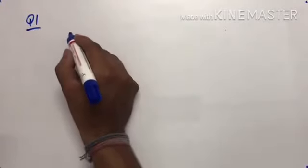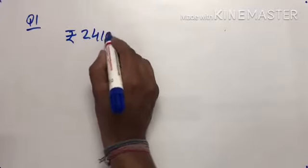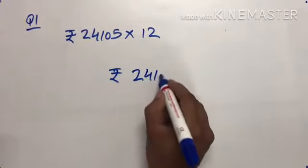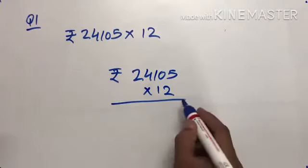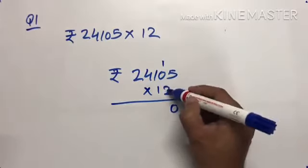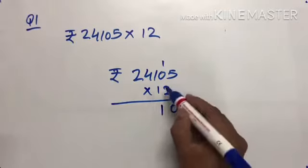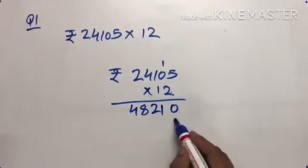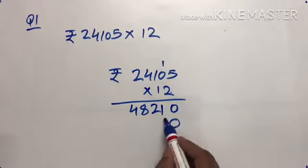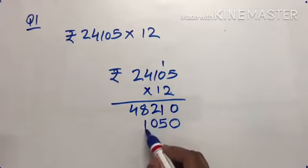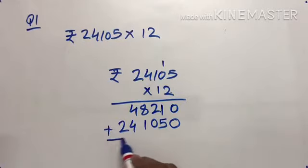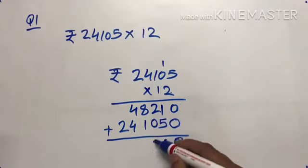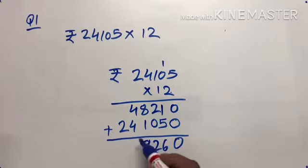Question number 1: rupees 24,105, we have to multiply it by 12. Simply what we will do, 24,105 and multiply by 12. We will multiply by 2: 5 times 2 is 10, one carry, 0 times 2 is 0 plus 1 is 1, 1 times 2 is 2, 4 times 2 is 8, 2 times 2 is 4. Now the other number, multiply by 1: 5, 0, 1, 2, 4.